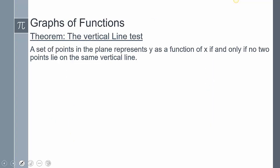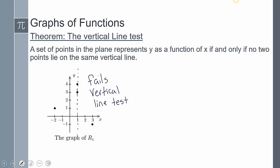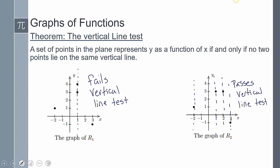We can take this to another level with a theorem called the vertical line test. This theorem states that a set of points in the plane represents y as a function of x if and only if no two points lie on the same vertical line. If a vertical line only crosses a point once, it's a function. But if a vertical line crosses more than once, it is not a function. Comparing the examples, the first doesn't pass the vertical line test — it crosses two points. The second does pass because it only crosses once.